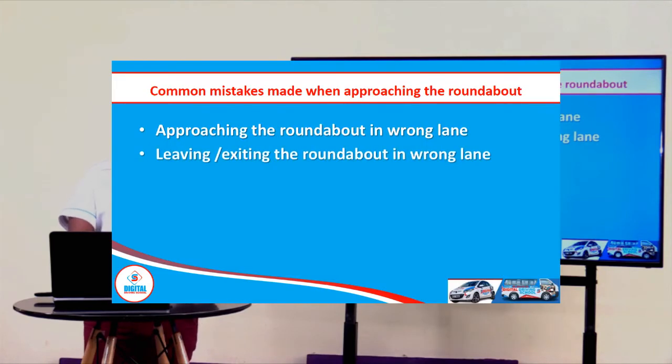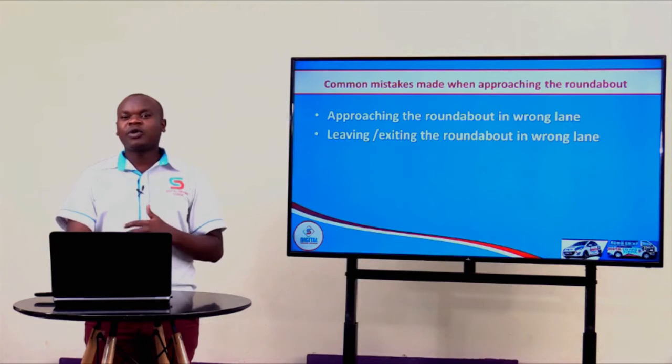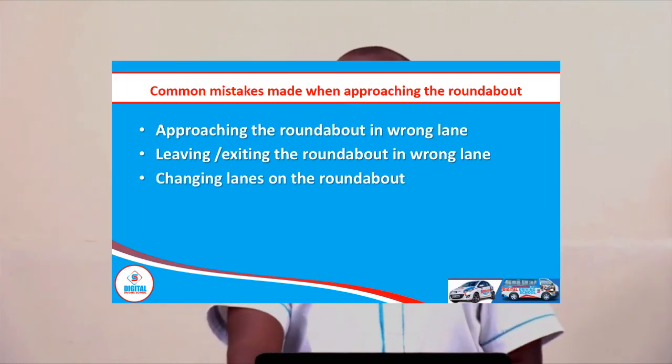Let us look at the common mistakes drivers usually make when approaching the roundabout. We have four mistakes. One is approaching the roundabout in the wrong lane, which will tempt you to make a mistake when you enter. The other mistake is leaving or exiting the roundabout in the wrong lane. People tend to change lanes in the roundabout — you are supposed to stick to your lane until you exit. And lastly, the incorrect observation of the traffic lights, observing the traffic lights from the wrong direction.